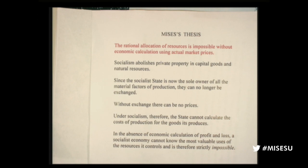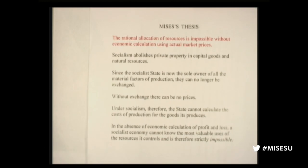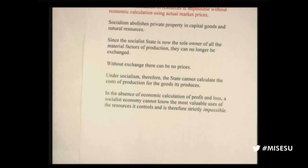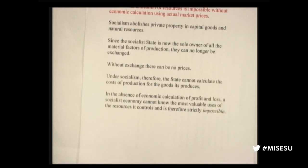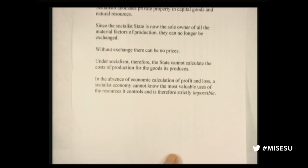Here is Mises's argument. First, socialism abolishes private property in capital goods and natural resources — all socialists, including Marx, wanted collective ownership of all material factors of production. Second, if everything is owned and controlled by one group or individual — if the state is the sole owner of all material factors of production — they can no longer be exchanged. If one group owns all the steel mills, mines, machinery, and farms, there can be no exchange.